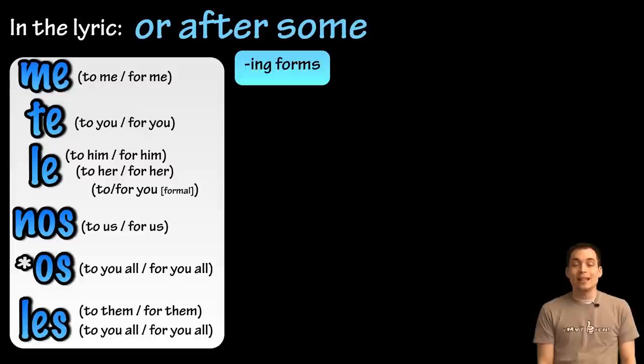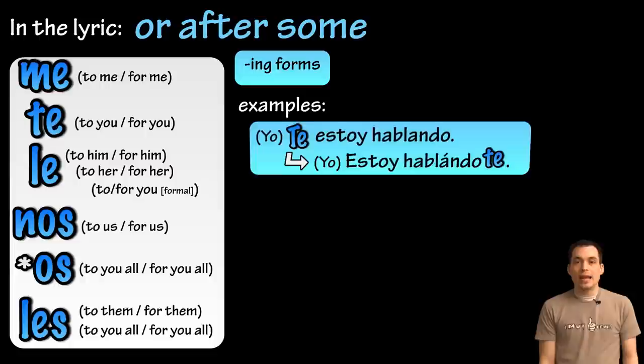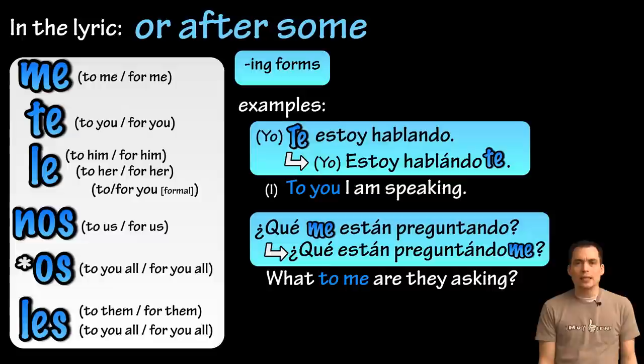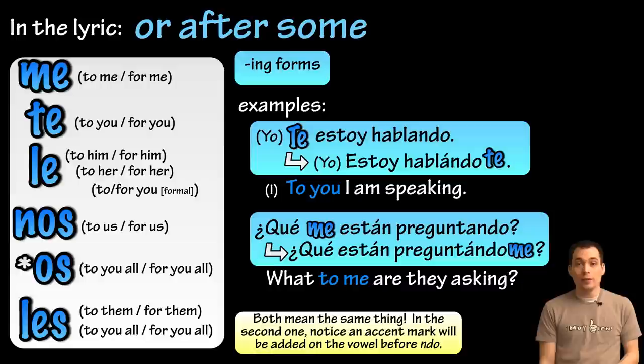Or, with estar and the -ing form — remember that is the -ndo ending — I might say 'te estoy hablando,' meaning 'to you I am speaking right now.' I can attach this to the -ndo form: 'estoy hablándote' — 'I am talking to you.' Notice we add an accent mark over that vowel, and this is more like the English order. For example, '¿Qué me están preguntando?' — 'What are they asking me right now?' And I could put it on the end: '¿Qué están preguntándome?' — 'What are they asking me?' Again, both are used and understandable. Notice we put an accent mark over the vowel before the -ndo.